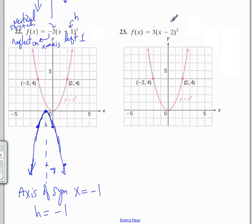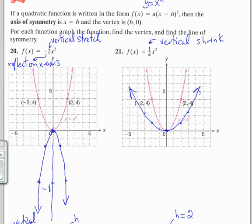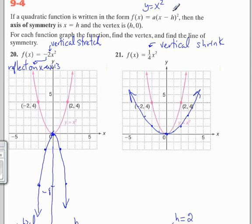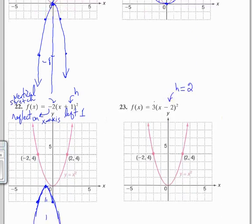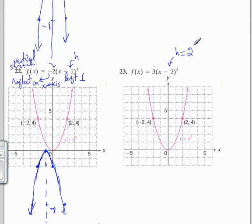Let's take a look at number 23 here. h is positive 2. Because remember, this is x minus h. So the h is what follows the negative sign. So this is our axis of symmetry. Is x equals 2 in this case. And we have a vertical stretch by a factor of 3.